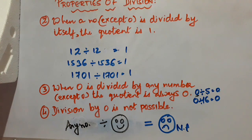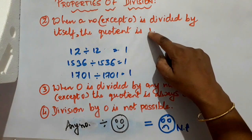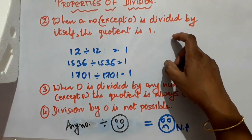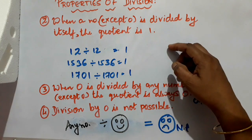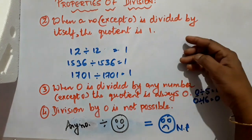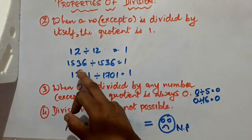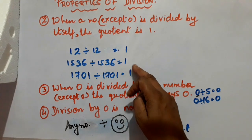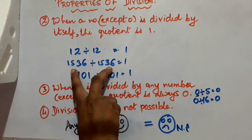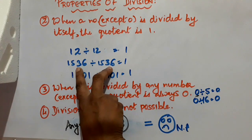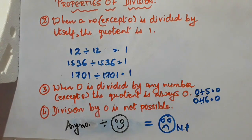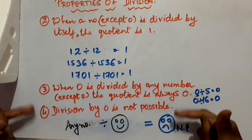Let us see the other properties of division. When a number except 0 is divided by itself, the quotient is 1. That is, 12 divided by 12 is 1; 15 divided by 15 is 1; 1536 divided by 1536 equals 1. When these two numbers are the same, the answer is 1 — that is, the quotient is 1.